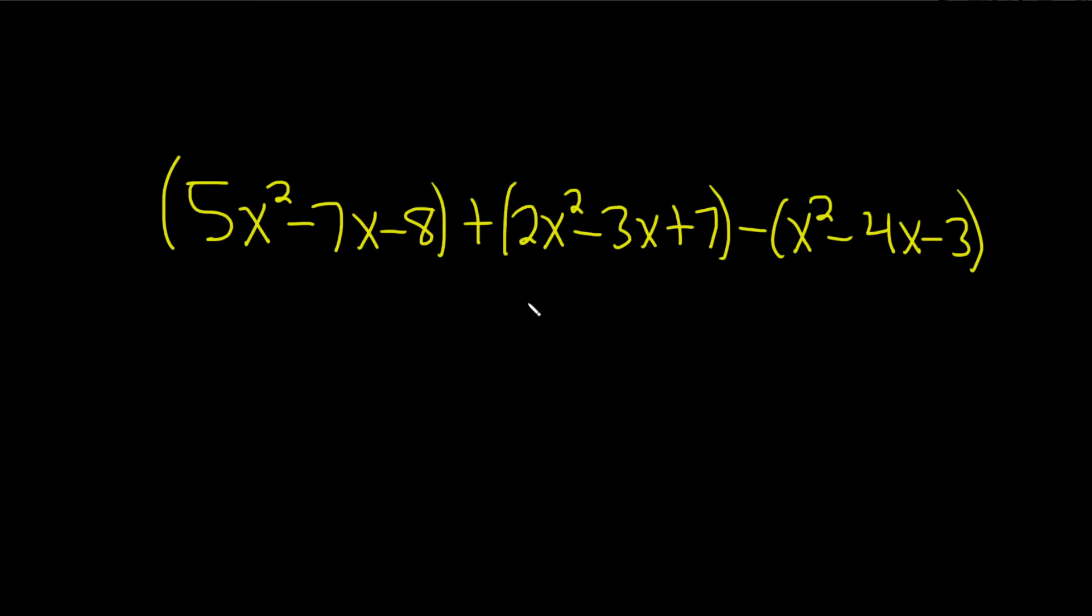In this problem we have these polynomials and we have to add and subtract them and write the answer in standard form. That means from the biggest degree to the smallest, so the biggest exponent to the smallest, and then we have to find the degree.